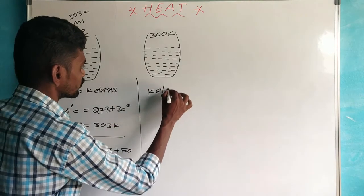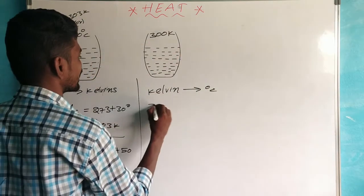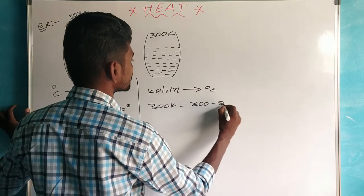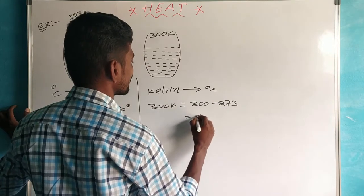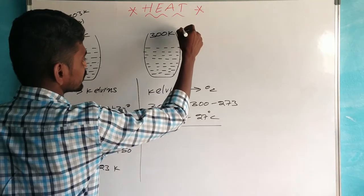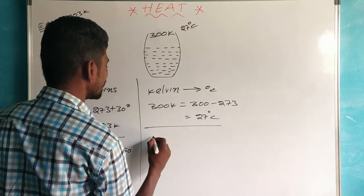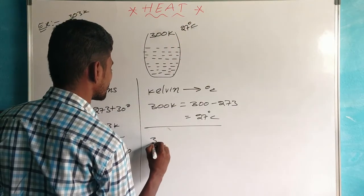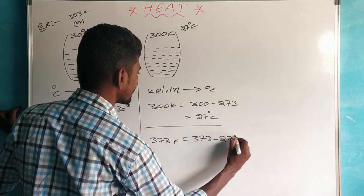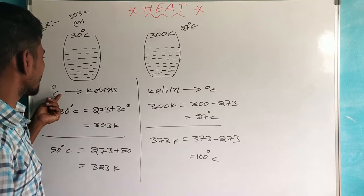Converting from Kelvin to degrees centigrade: 300 K is equal to 300 minus 273, which gives 27 degrees centigrade. Another example: 373 Kelvin corresponds to 100 degrees centigrade. We can convert between degrees centigrade and Kelvin in this way.